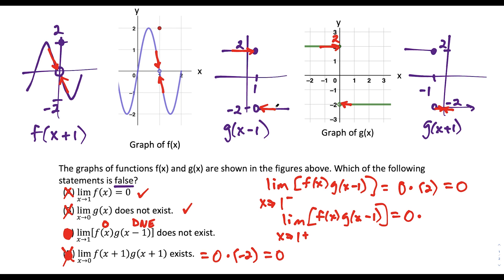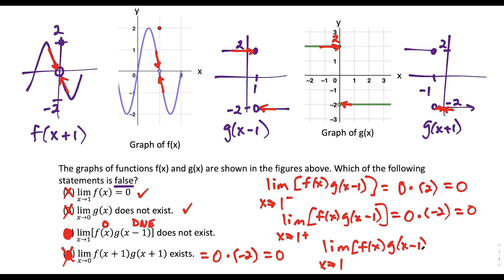Even though our left and right limits of g of x minus one are different — making that limit not exist — we're multiplying these constants by zero. So now we have a left and right side limit that are both equal to zero, which tells us that the limit in general as x approaches one of f of x times g of x minus one would just be equal to zero. So the limit as x approaches one does in fact exist, and it's equal to zero.